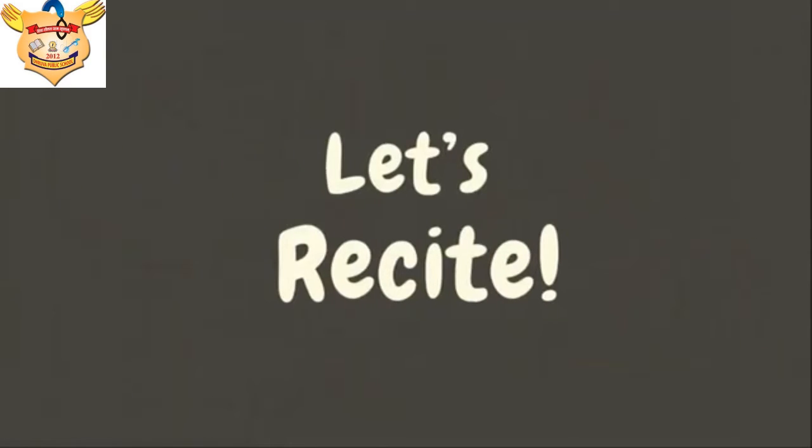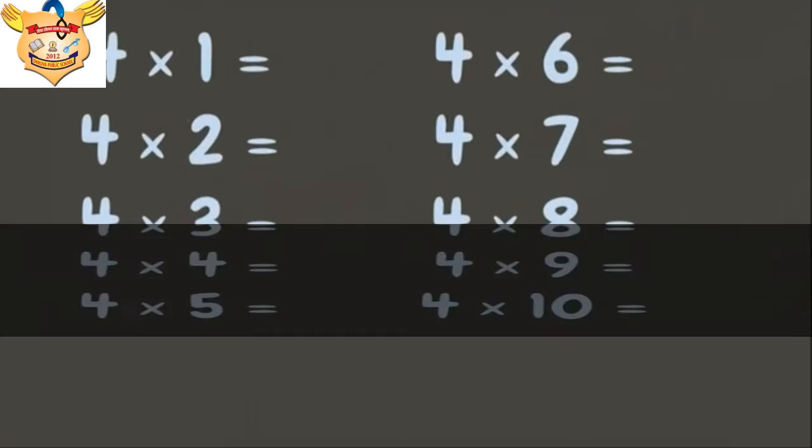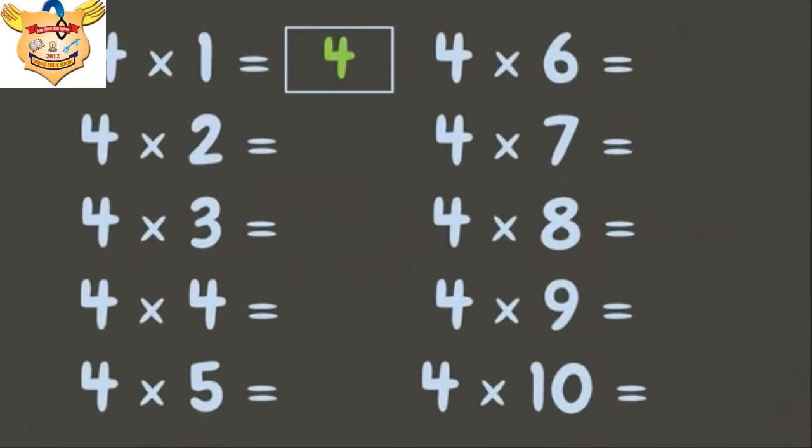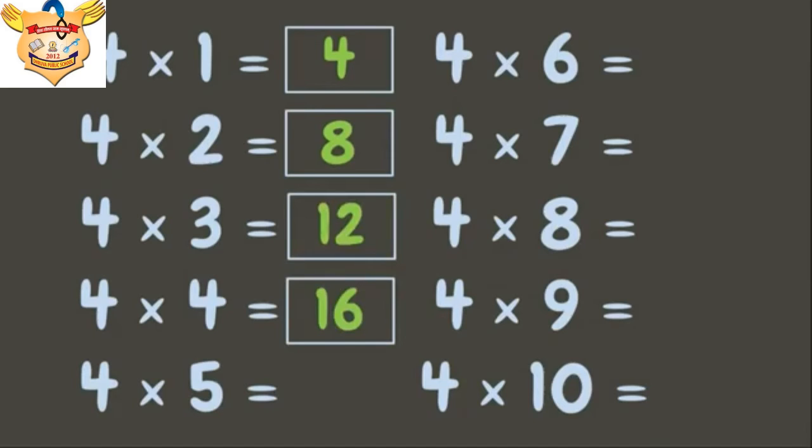Come, let's recite table of 4 in rhythm. 4 ones are 4, 4 twos are 8, 4 threes are 12, 4 fours are 16.